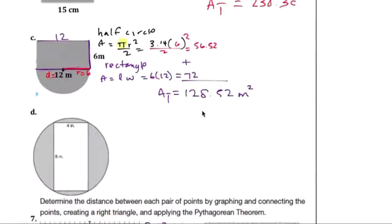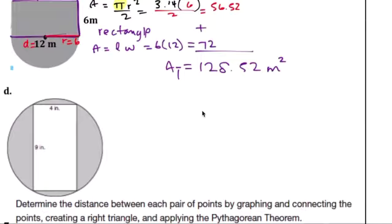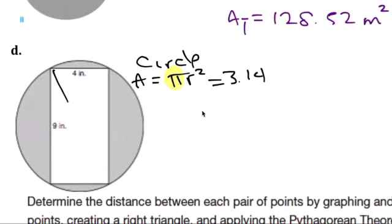And then here we start out with the circle. Circle is area equals pi R squared. And for pi, we always put 3.14. Radius, we don't know the radius. I'm going to look at it this way so that I can use this triangle instead. Doesn't matter which, but the number is already there.